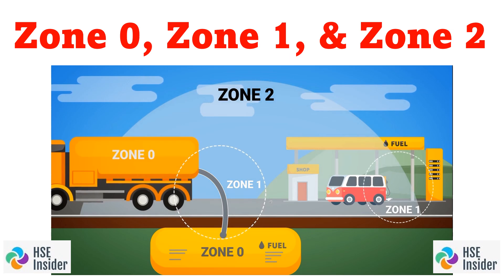Zone 1 is the area where an explosive atmosphere is likely to occur under normal operating conditions. Although the presence of an explosive atmosphere in Zone 1 is not as constant as in Zone 0, it is still a high-risk area that requires precautions to be taken. Equipment used in Zone 1 must be designed to prevent the ignition of hazardous substances and to minimize the risk of explosion.